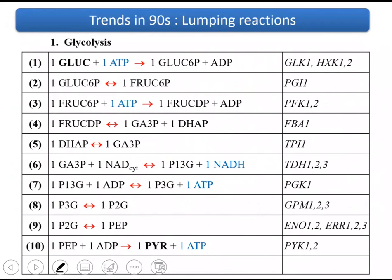I have shortly talked about one trend in the 90s when it comes to using metabolic networks for simulations, and that was the representation of biomass reaction in terms of metabolic precursors. This way, you don't have to write those reactions that show how the building blocks such as amino acids, fatty acids, nucleotides, etc. are synthesized from precursor metabolites. So you really decrease the size of your metabolic network — the number of reactions are really decreased with this approach.